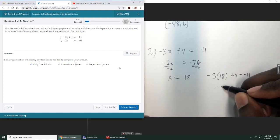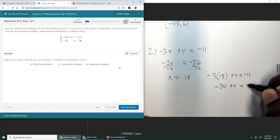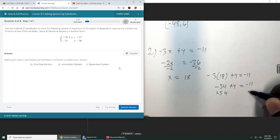And then we'll multiply this. This will give us negative 54 plus y equals negative 11, and we're going to add 54 to both sides.